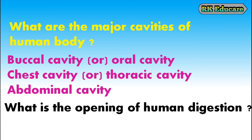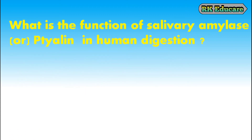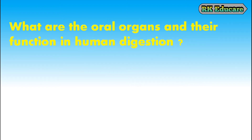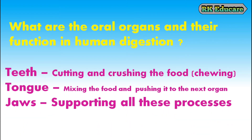What is the opening of human digestion? Mouth is the opening of human digestion. What are the oral organs and their functions in human digestion? Teeth, tongue and jaws are oral organs. Teeth help in cutting and crushing the food or chewing. Tongue helps in mixing the food and pushing it to the next organ. Jaws are the supporting organs in these processes.